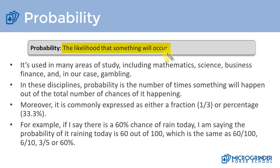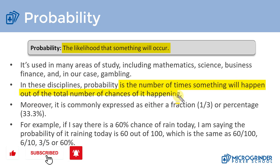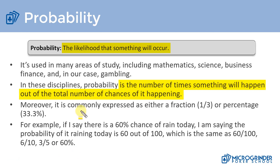A more discrete definition of probability is that it's the number of times something will happen out of the total number of chances of it happening. So for example, we could say it's going to happen one out of three times, or 33.3 percent of the time.